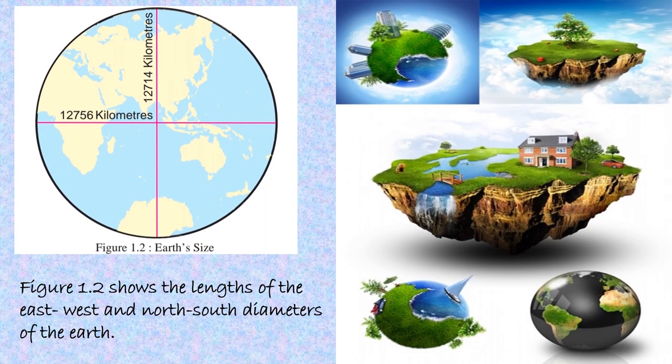In this picture, we can see the size of the earth. The length of the East-West diameter is 12,756 km and of the North-South diameter is 12,714 km.